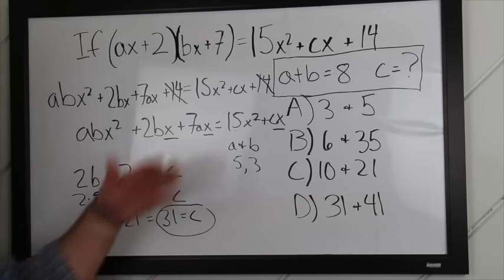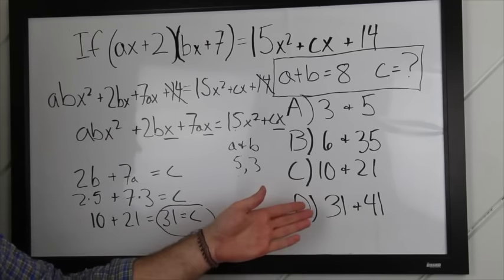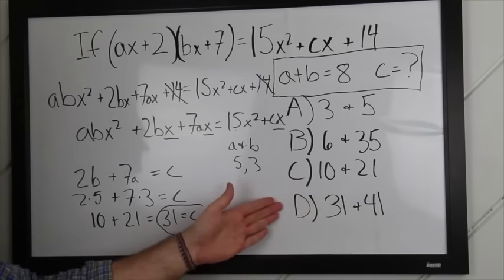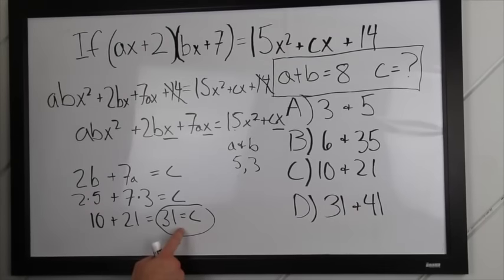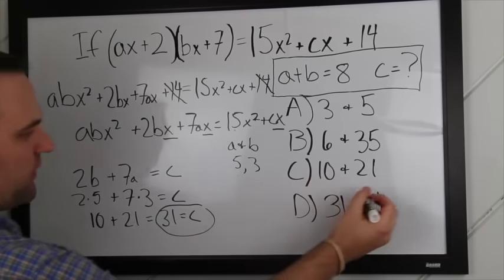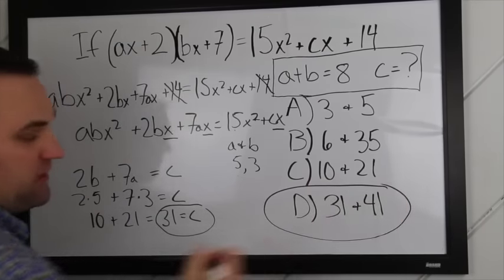So, right there if we look at our answer choices, 31 is only in one of our answer choices, so it clearly has to be d. So, since 31 equals c, 31 is only one of our answer choices, we can go right ahead and choose d and move on.